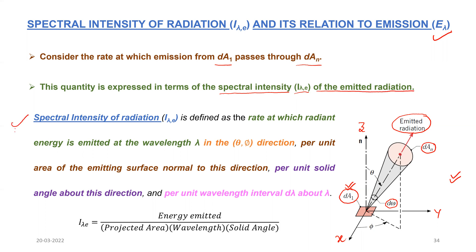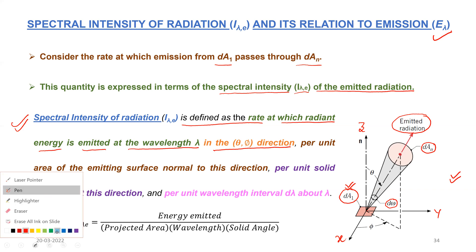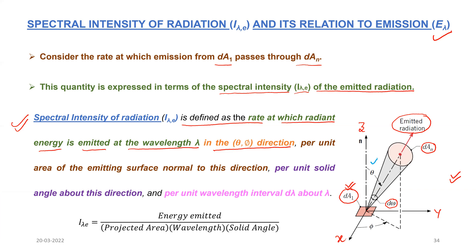Now let us go to the definition of spectral intensity of radiation i_lambda_e. It is defined as the rate at which radiant energy is emitted at the wavelength lambda in the theta-phi direction. In this diagram, this energy is emitted in the direction theta — the zenith angle — and at the azimuthal angle phi. So the direction is theta-phi.